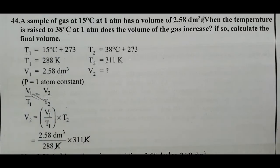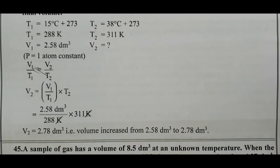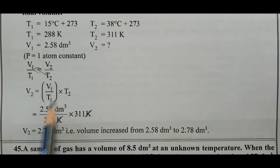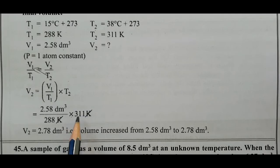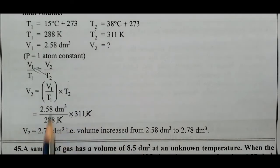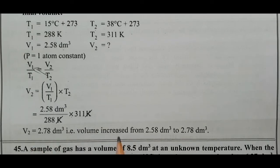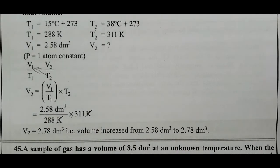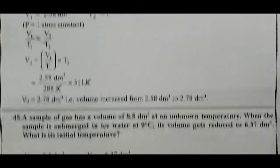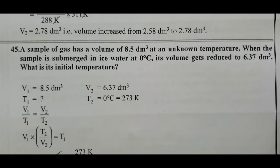V1 is 2.58, multiplied by T2 = 311, divided by T1 = 288. Solving gives final volume = 2.78 decimeter cube. The volume increased from 2.58 to 2.78 decimeter cube.